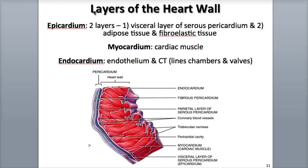There are three layers that make up the heart wall itself. The outermost layer is called the epicardium, the middle layer is the myocardium, and the innermost layer is the endocardium. The epicardium is the smooth, slippery outer covering that surrounds the heart. There are two layers of tissue that make up the epicardium: the visceral layer of the serous pericardium is the outermost layer, and underneath that is a layer of connective tissue consisting of adipose tissue, fibroelastic tissue, as well as blood vessels.